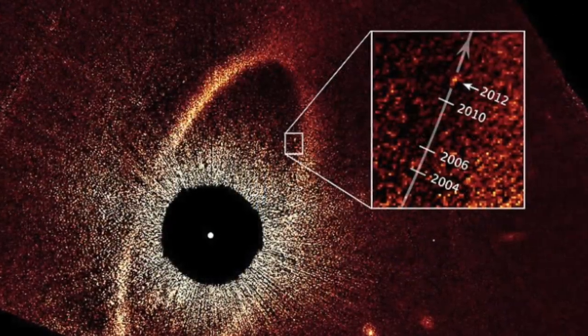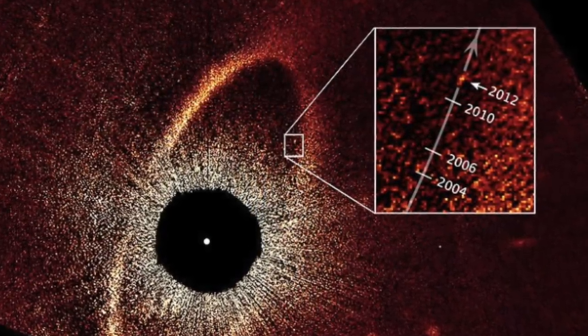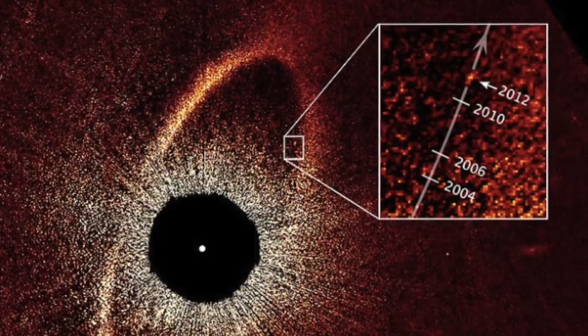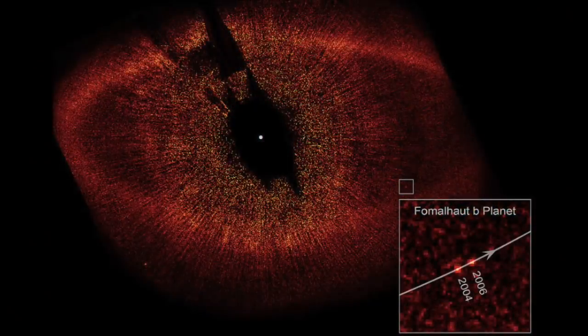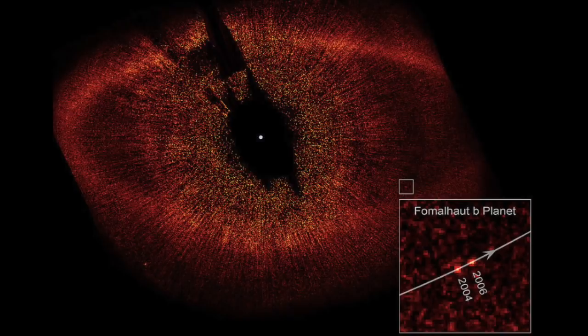The black circle at the center of the image blocks out the light from the bright star, allowing reflected light from the belt and planet to be photographed. The Hubble images were taken with the Space Telescope Imaging Spectrograph in 2010 and 2012.